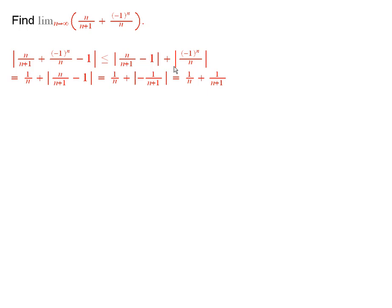Now, absolute value of this thing is just 1 over n. Absolute value of this is just 1 over n plus 1. So I see that the thing that I'm trying to estimate is bounded above by an expression like this.